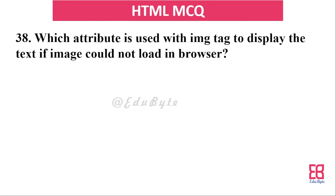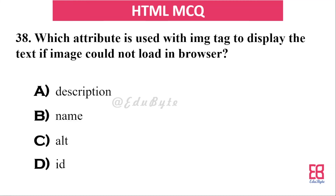Question thirty-four: which attribute is used with the image tag to display text if the image could not load in the browser? The options include name, alt, and ID. The correct answer is alt — the alt attribute displays a description text when the image fails to load.